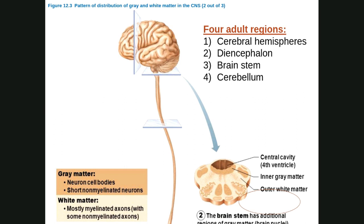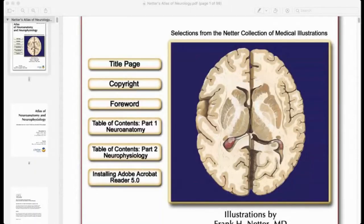Looking at the neuro atlas, the outer area of the cerebral cortex has gray matter and the inner area has white matter, which consists of different types of neural fiber tracts. The outer surface of the cerebral cortex has gray matter; the white matter is in the inner aspect — this is the key relationship to understand.